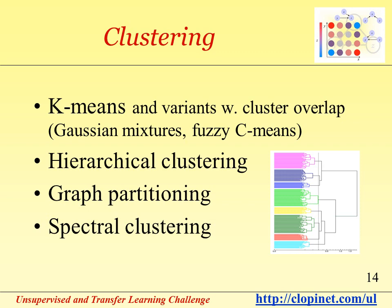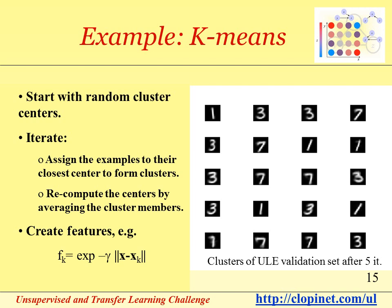Clustering also offers a number of ways to perform unsupervised learning. As an example, consider the k-means algorithm. Start with random cluster centers, iterate: assign the examples to their closest center to form clusters, then recompute the centers by averaging the cluster members. To create a new data representation from an original vector x, features fk may be obtained by computing a similarity coefficient between x and the cluster centers xk — for instance, the negative exponential of the distance between x and xk. This algorithm was applied to the sample dataset ULE (unsupervised learning example) provided for the unsupervised and transfer learning challenge, demonstrating that even with such a simple algorithm you can improve performance over using the original data representation. The MATLAB code is provided.